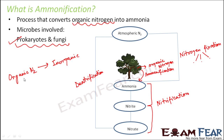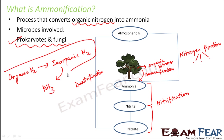Why organic? Anything that contains carbon is called organic. When you look at a protein or a nucleic acid, they all contain nitrogen but they also contain carbon — that is why it is organic nitrogen. So prokaryotes and fungi act on this organic nitrogen and convert it into inorganic nitrogen, which is given back to the atmosphere in the form of ammonia. This entire conversion takes place during the process of ammonification.